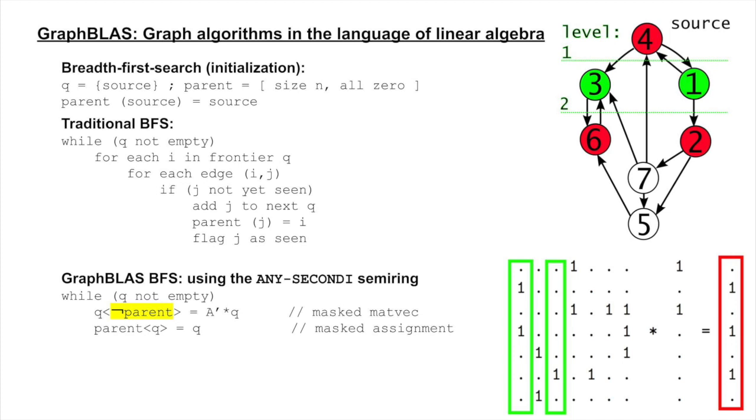Node 4 is excluded with the if-test in the traditional BFS. This translates to a matrix mask where only entries without a parent are allowed into the final result.